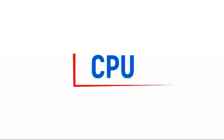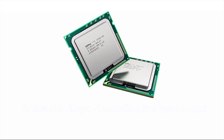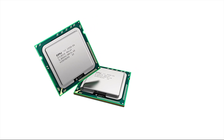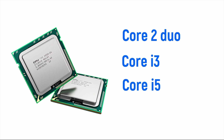CPU. Central processing unit is the electronic circuitry within a computer that carries out the instructions of a computer program by performing the basic arithmetic, logic, controlling, and input-output operations specified by the instructions. There are several varieties depending on the ability: Core 2 Duo, Core i3, Core i5, Core i9, some of them are.